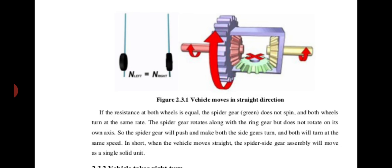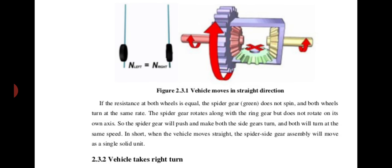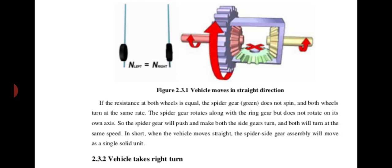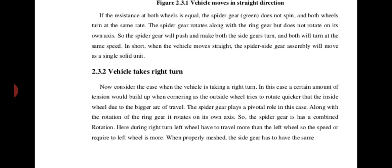In short, when the vehicle moves straight, the spider gear assembly moves as a single solid unit. If you have any doubts you can write in the YouTube comment section and I will answer. When the vehicle is going in a straight line, the spider gear will not rotate on its own axis — it rotates only because the pinion is rotating. So direct power gets transmitted to the side gears and the wheels rotate. Now consider the case when the vehicle is taking a right turn.